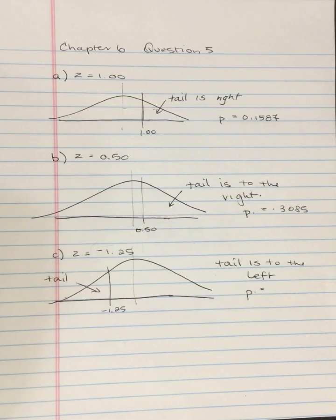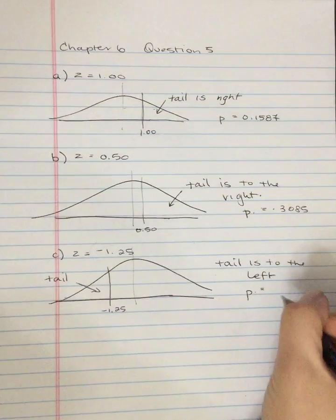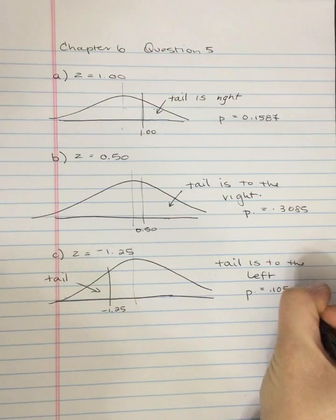So if I look up 1.25, I'm again looking for the proportion in the tail, and that is 0.1056.